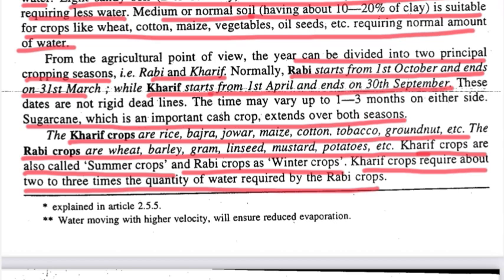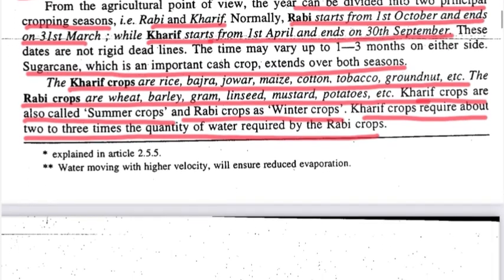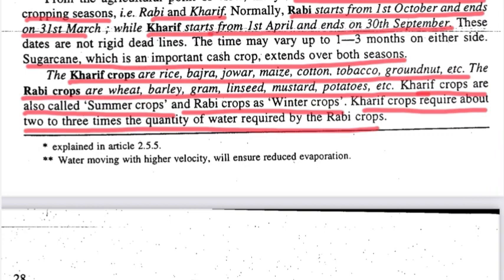The cropping season is divided into two types: Rabi and Kharif. The Rabi season starts from 1st October and ends on 31st March. The Kharif season starts from 1st April and ends on 13th September. The Kharif season is the most important part.